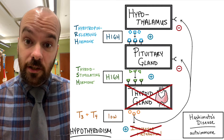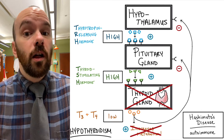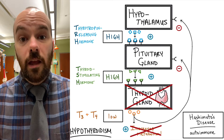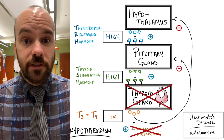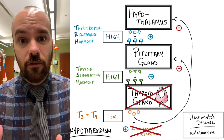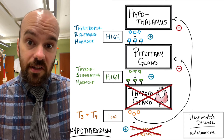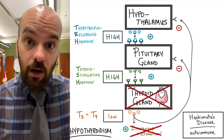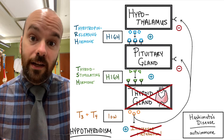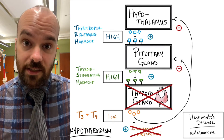So somebody goes to the endocrinologist with classic hypothyroidism symptoms. The endocrinologist will test for TSH and T3 and T4 levels. If TSH levels are high but T3 and T4 levels are low, that's a good sign that Hashimoto's disease could be the cause of the hypothyroidism. The doctor would then perform other diagnostic tests to confirm.